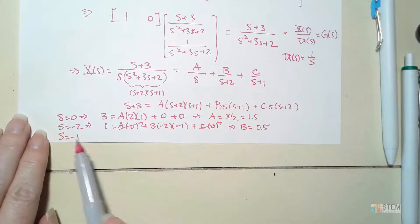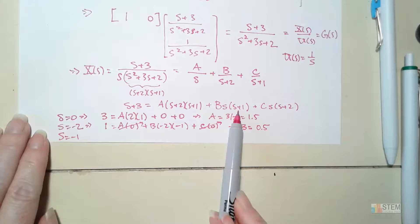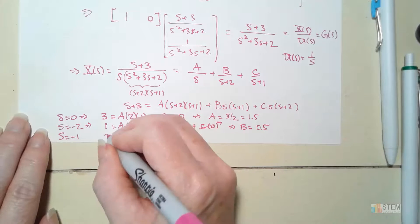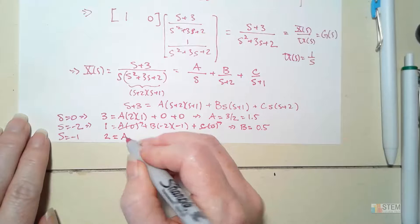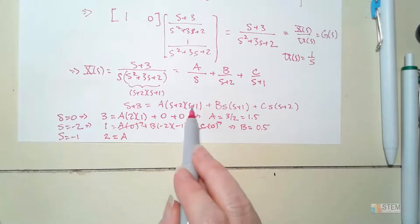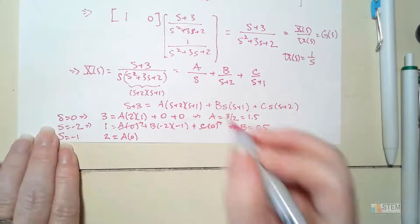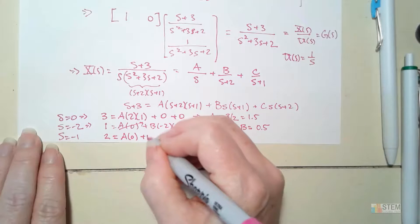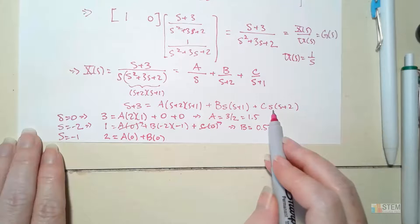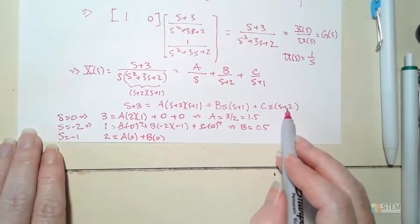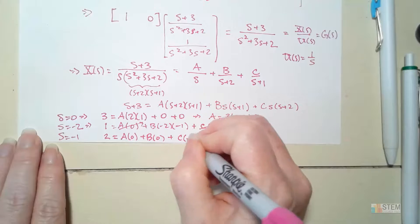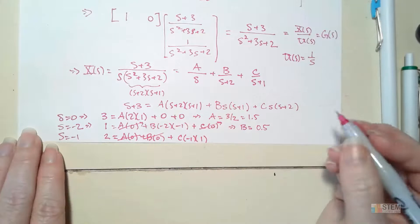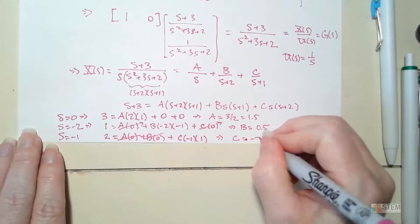Finally let S equal negative 1: the left side gives negative 1 plus 3 equals 2. The A term goes to zero and the B term goes to zero. We have 2 equals C times (−1) times (1), so C equals negative 2.